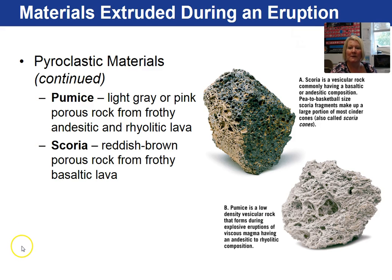Pumice is a pyroclastic material — light gray, very porous, will float in water — and tends to be intermediate and felsic in composition. Scoria is a vesicular rock having mafic or basaltic composition, and it is pea to basketball size as far as fragment size goes.